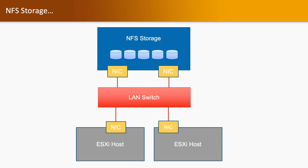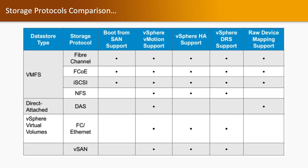So that's about the storage part. Now we have a storage protocol comparison. We have multiple features available in vSphere, such as boot from SAN, vSphere vMotion, vSphere HA, vSphere DRS, and RDM. We'll compare storage protocols in the form of Fiber Channel, FCoE, iSCSI, NFS, DAS, Ethernet, and vSAN. The datastore types are VMFS, direct attached storage, and vVols. If we have Fiber Channel with the VMFS datastore type, it supports all features such as boot from SAN, vMotion, HA, DRS, and RDM.